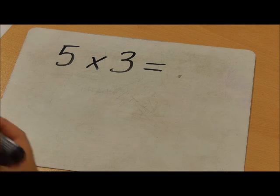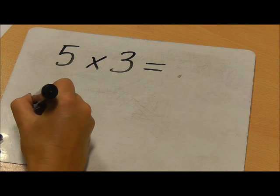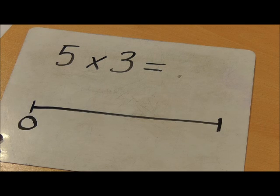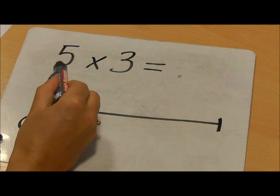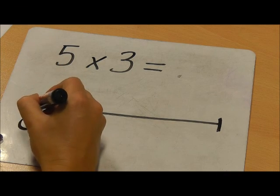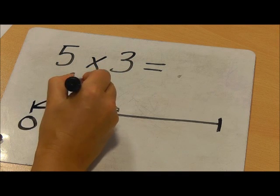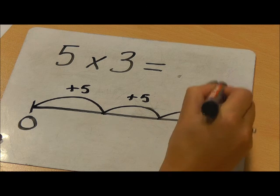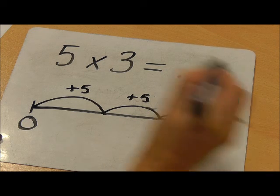To work out the answer using my blank number line, if I start at zero and then do a jump of 5 three times: 5, 5, 5.